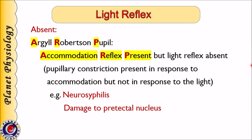The presence of accommodation reflex — or pupillary constriction in response to accommodation — indicates that the afferent as well as efferent pathways for pupillary reaction are normal. Hence there is damage to the pre-tectal nucleus. This is observed in cases of neurosyphilis.